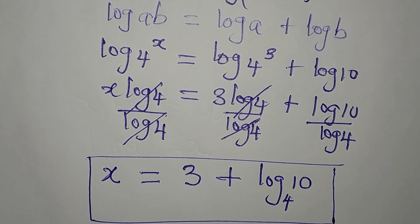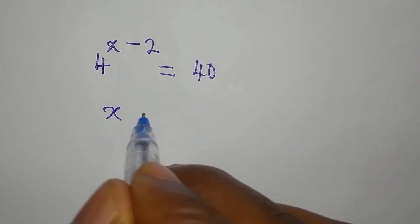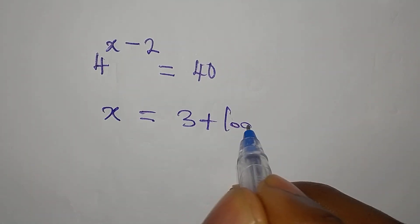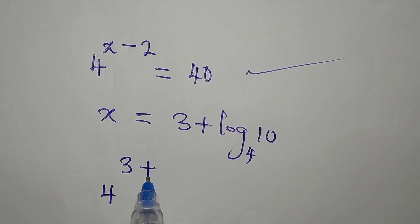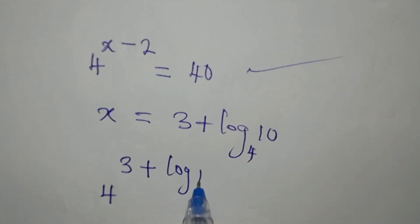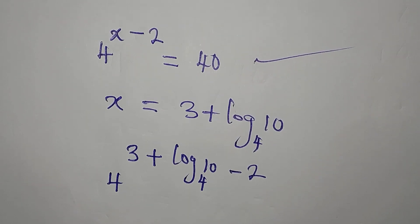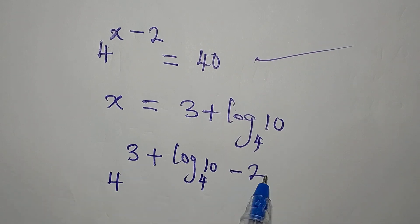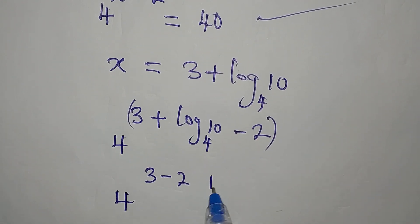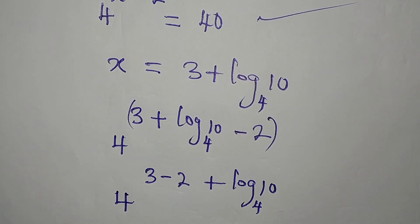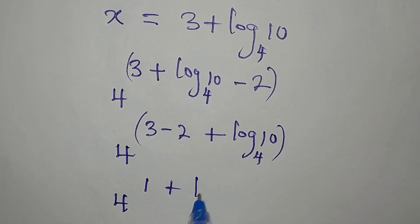Let's put this back into the equation and see if we got the right answer. Our x is 3 plus log 10 to base 4. We'll now have 4 to the power of 3 plus log 10 to base 4, then minus 2. Collecting terms in the power, this becomes 4 to the power of 3 minus 2 plus log 10 to base 4. Remember, log 10 to base 4 is not 1. Now 3 minus 2 is 1, so we have 4 to the power of 1 plus log 10 to base 4.